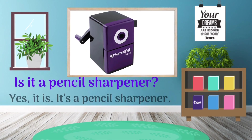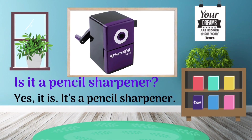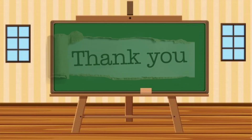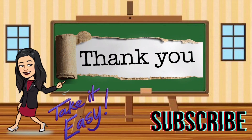Let's see the last example. The question here is: 'Is it a pencil sharpener?' Now let's pay attention to the picture. Based on this picture, we can answer by saying 'Yes, it is. It's a pencil sharpener.' That's all for our material today about how to make a question if you want to make sure about a thing related to things in the classroom.